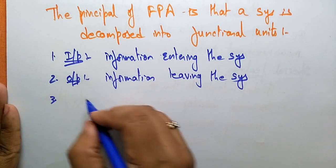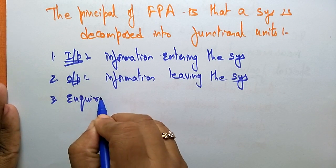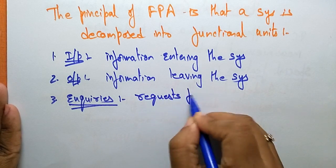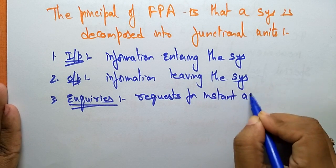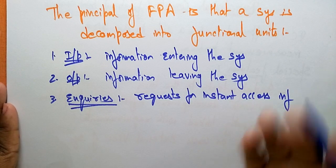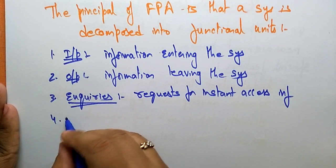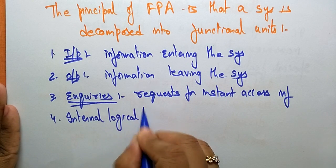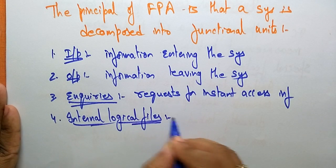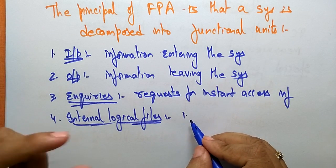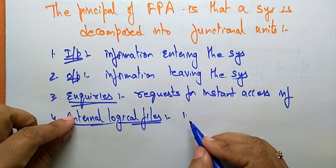The third functional unit is Inquiries, which is related to both input and output. Here the request is for instant access to information — whether it is an input or an output, we just request access for instant information inside or outside the system. The fourth is Internal Logical Files — information held within the system. The logical files present inside the system are called internal logical files.